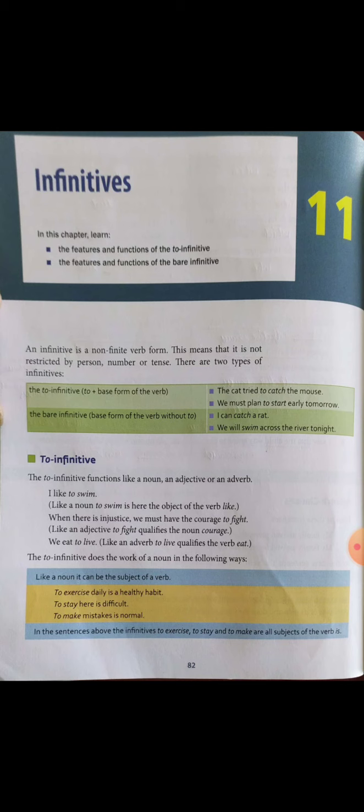The 'to' infinitive functions like a noun, an adjective, or an adverb. For example, 'I like to swim' — here 'to swim' functions like a noun as the object of the verb 'like.' In 'We must have the courage to fight,' 'to fight' functions like an adjective qualifying the noun 'courage.' In 'We eat to live,' 'to live' functions like an adverb qualifying the verb 'eat.'